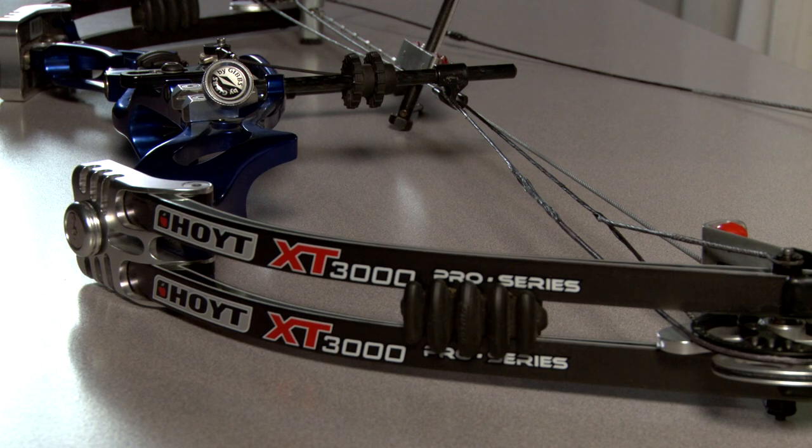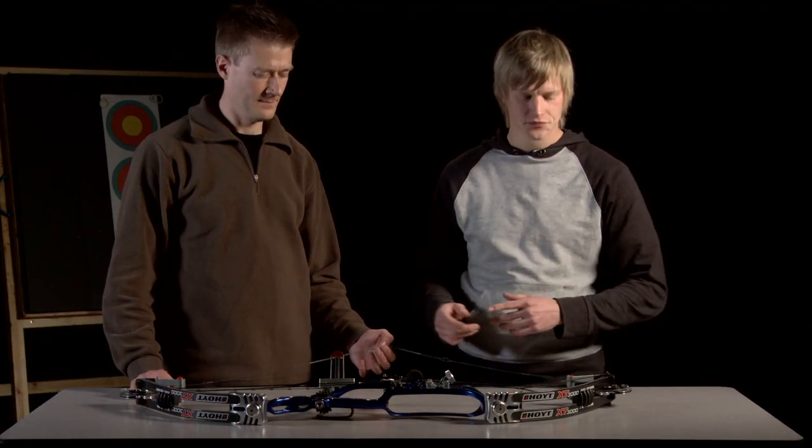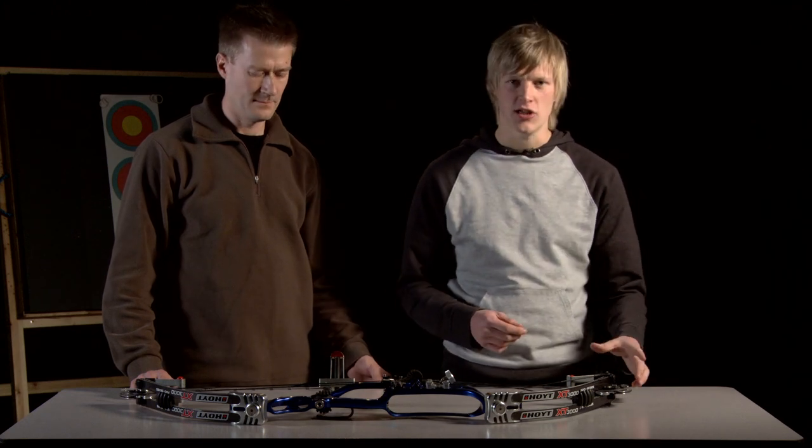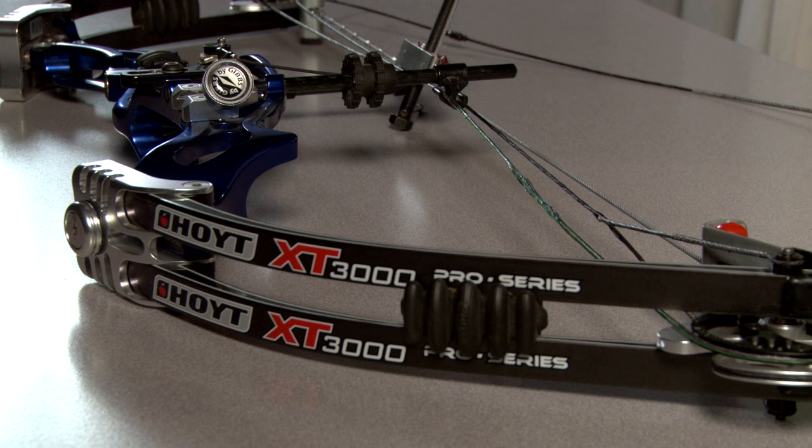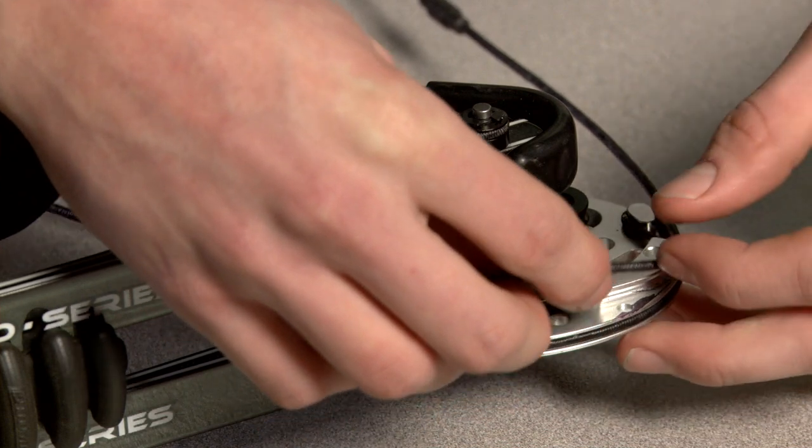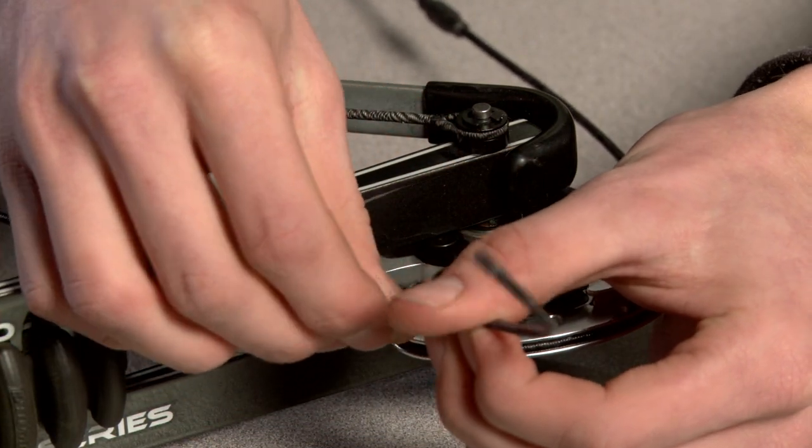So, we've now got the bow in the bow press and we've taken all the tension off the strings and cables. So, what we need to do is we need to rotate the top cam more. So, in order to do that, we need to lengthen this cable here. So, we're going to do that by taking it off the cam and taking two full twists out of it.